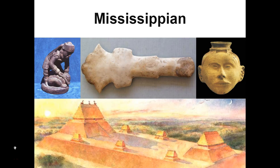The woodland period in the eastern United States was followed by the Mississippian period, which was characterized by the emergence of greater levels of social inequality. We will explore how and why this social inequality emerged and how it was expressed, particularly in the transformation of the uses of mounds.